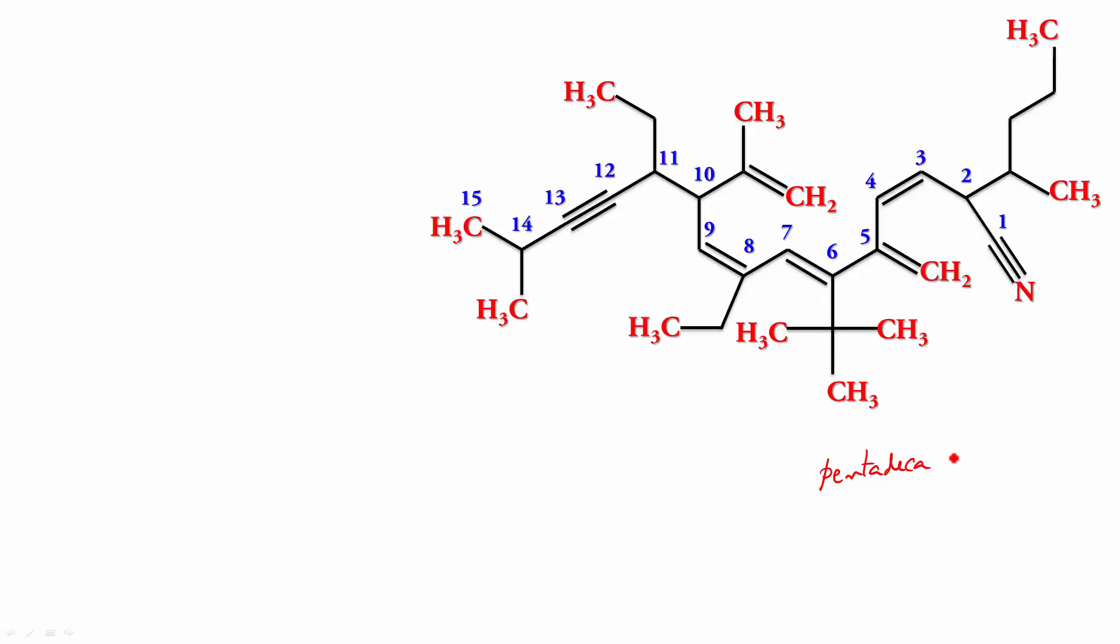So the ending has to be pentadeca. Pentadeca represents 15 carbons. And you got a double bond sitting at 3, double bond at 6, double bond at 8. So this is going to be pentadeca 3, 6, 8, trien, 12, yn. And I'm going to use the word E because after that I'm going to use nitrile. So this is the parent: pentadeca 3, 6, 8, trien, 12, yn, and nitrile.